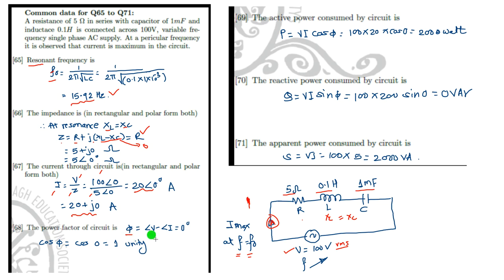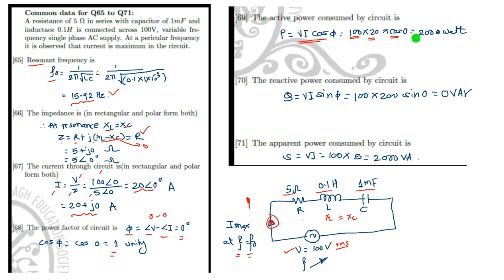The phase angle φ is the angle of voltage minus angle of current: 0° − 0° = 0°. So the power factor is cos(0°), which is unity. Active power is given by VI cos φ: V = 100, I = 20, cos(0°) = 1, giving 2000 Watt.